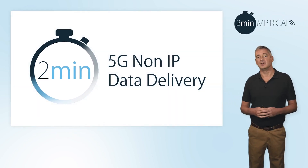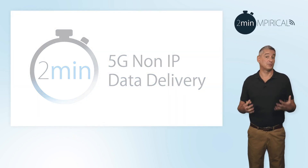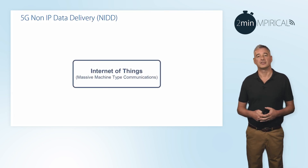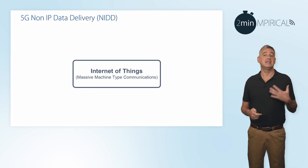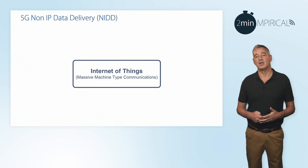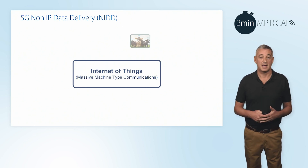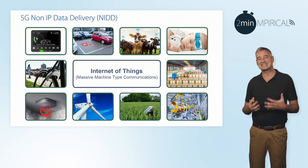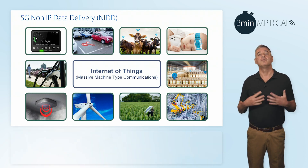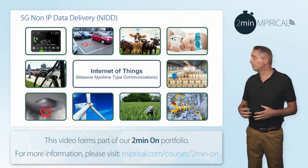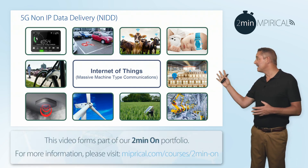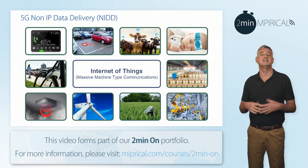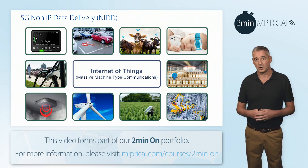The Internet of Things, or more specifically massive machine type communications, is seen as being one of the three key pillars of a 5G system, and in so doing is likely to drive a massive amount of the 5G traffic, supporting these many smart and intelligent things as they send data across the 5G network.